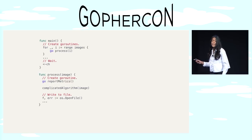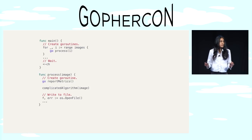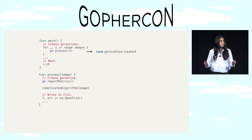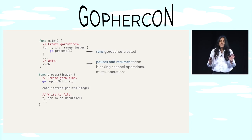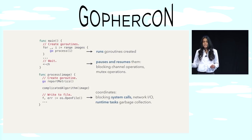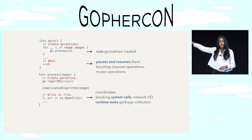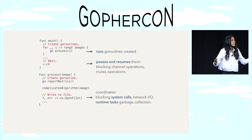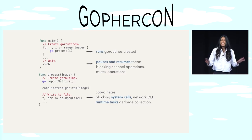Now, in this program, and every other Go program, the scheduler is what makes it so that the Go routines your program creates are actually run, and that they run concurrently and independently. It pauses and resumes them when they block on a channel or mutex operation. It also coordinates network I/O and blocking system calls like that file system call, which is a blocking call in Linux.